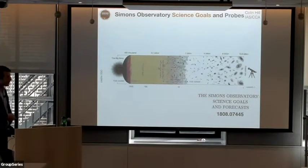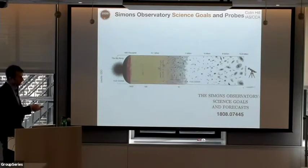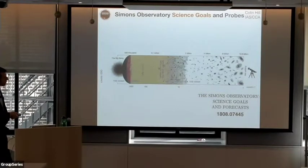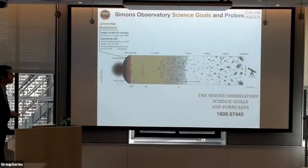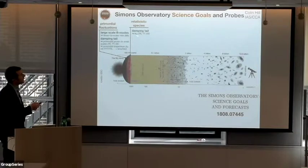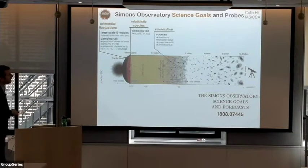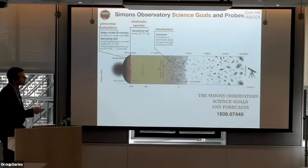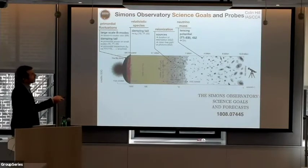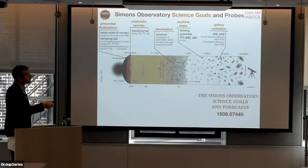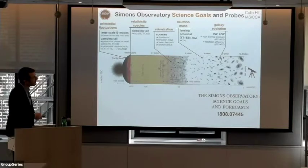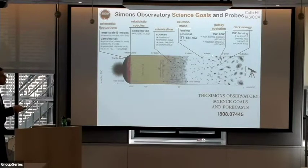Let me give an overview of our science goals and the probes we'll use. The CMB is a great tool for probing different aspects of physics and astrophysics across cosmic history. We can probe primordial fluctuations via CMB B-mode polarization, non-Gaussianity, and the primordial power spectrum shape. We can look for signatures of additional relativistic species beyond the three known neutrinos. At later times, we can probe reionization properties through the kSZ effect, probe neutrino masses through CMB lensing, learn about galaxy formation and evolution from the SZ effects, and probe dark energy through CMB lensing and SZ cluster counts.